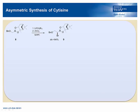Our synthesis of cytisine starts with a Matteson homologation of 8, which delivers the alpha-bromoboronate 9 with a diastereoselectivity of more than 94%. After only minimal workup, this building block was then reacted with vinyl Grignard to yield 10.